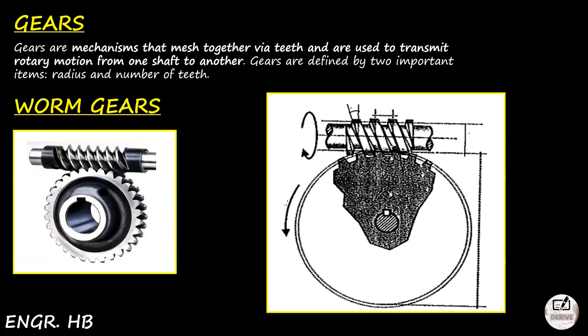So let's start with worm gears. Worm gears are used for high speed ratios, usually 10-to-1 or above. The mating members are called worm — which is the smaller one — and the worm gear or wheel. It's called a worm gear because it combines a worm and a gear. This is the worm and this is our gear.